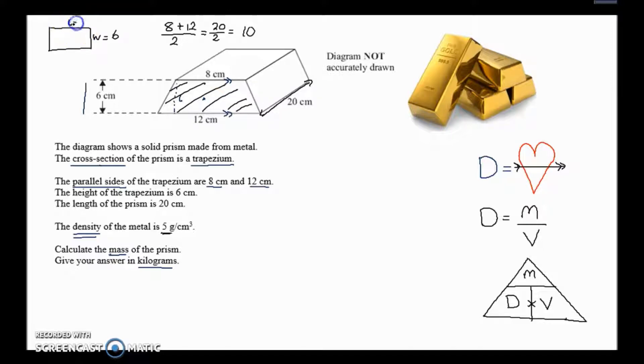So the average length is ten, and then you can just use your rectangle: 10 times 6 is 60. So the area at the front of this first part is 60 centimeters squared. That's the area of the cross-section of the trapezium.